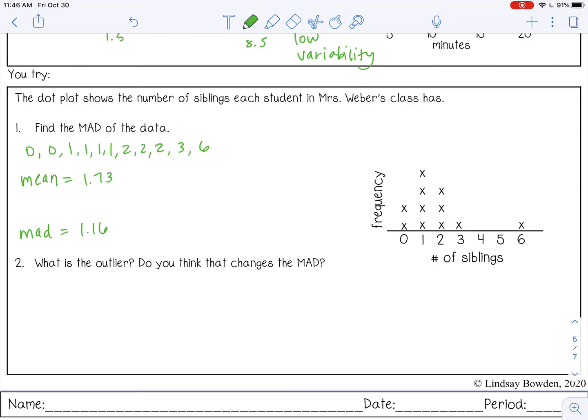So what is the outlier and do you think that changes the MAD? So there is an outlier here. Only one student has six siblings. All the other students are really close together. So if we took that six out and then did the MAD, it would be even smaller. It would be an even lower variability. So if we take out any outliers, the MAD would be lower, which means a lower variability. It's already pretty low, but it would be even smaller.